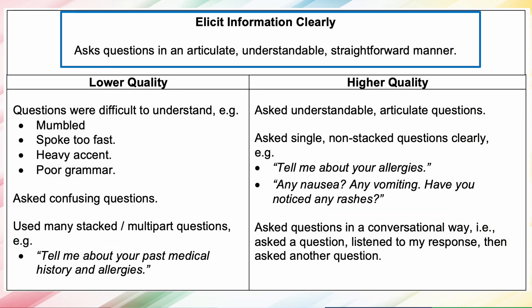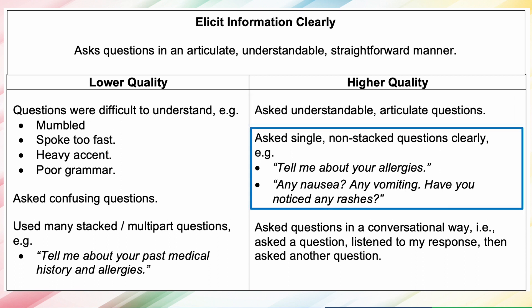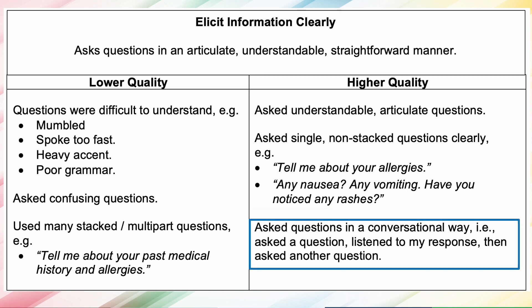Elicit information clearly means asking questions in an articulate, understandable, straightforward manner. Consider how well they ask understandable, articulate questions — and here also consider their ability to pronounce words correctly or speak in grammatical English under English language proficiency. How well do they ask single, non-stacked questions clearly? And how well do they ask questions in a conversational way — for example, asking a question, listening to your response, and then asking another question?